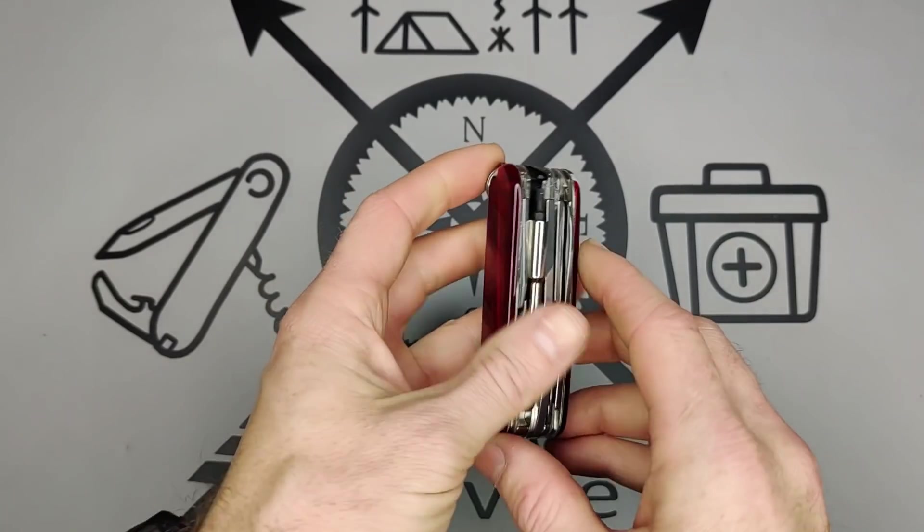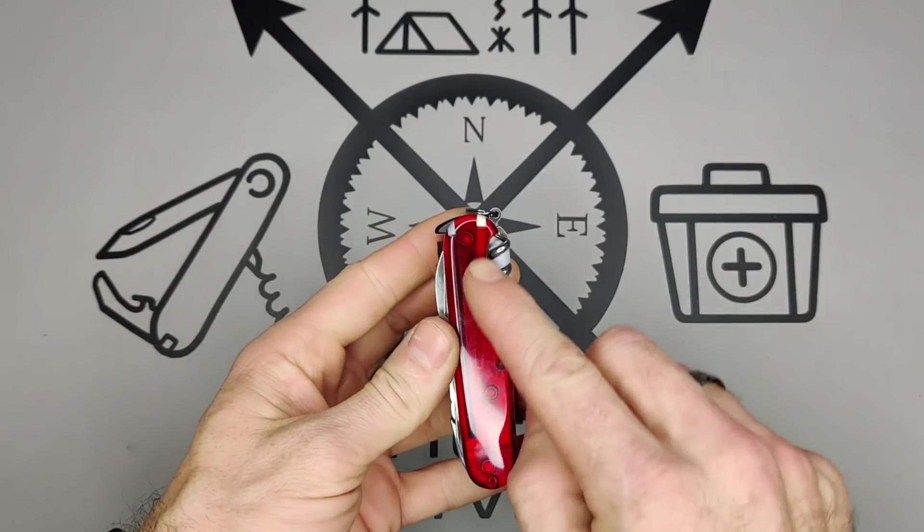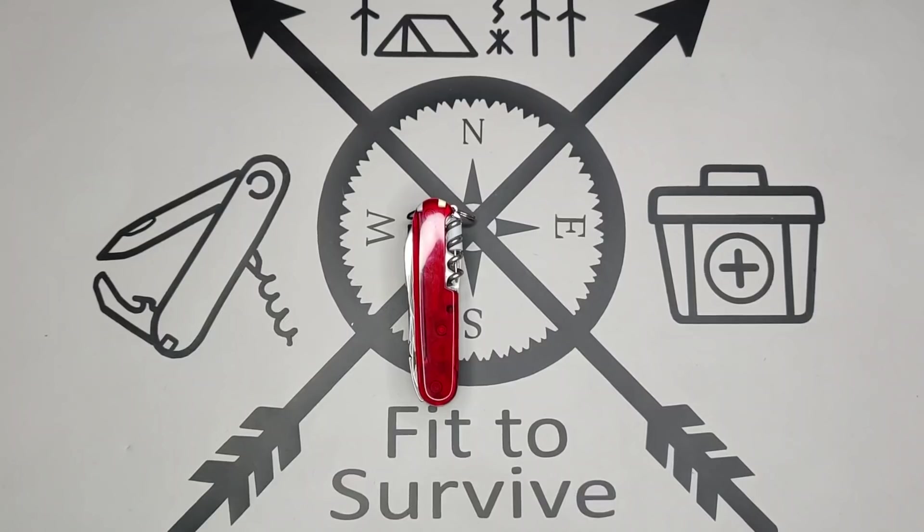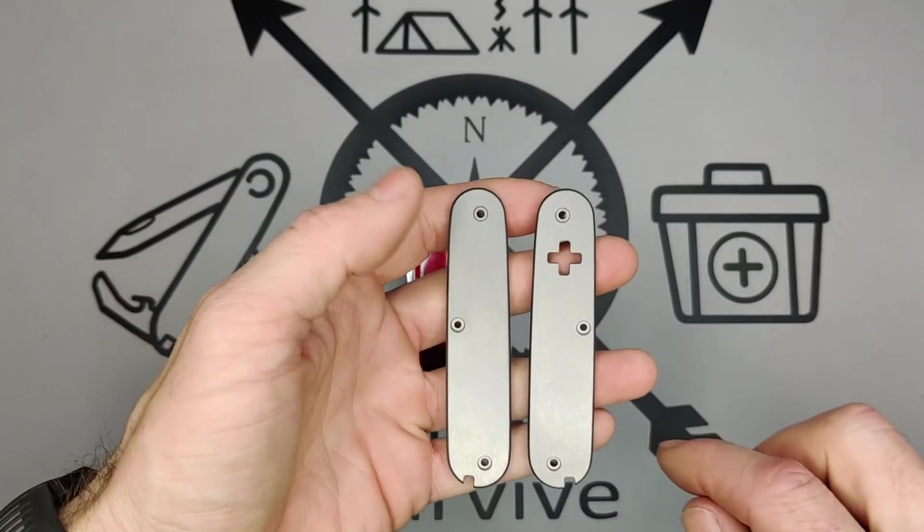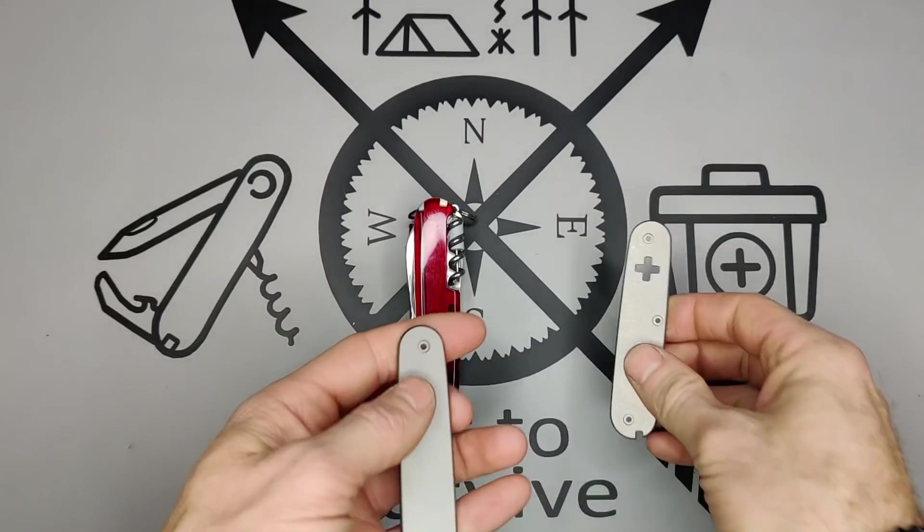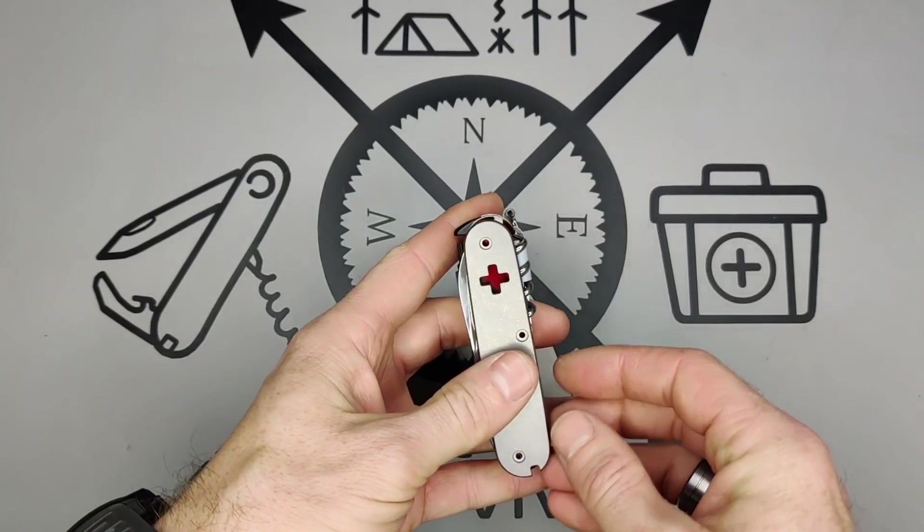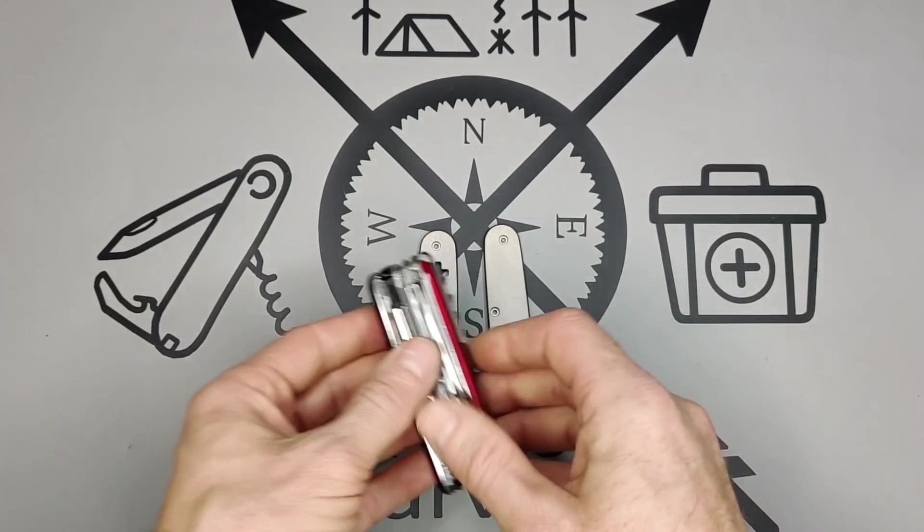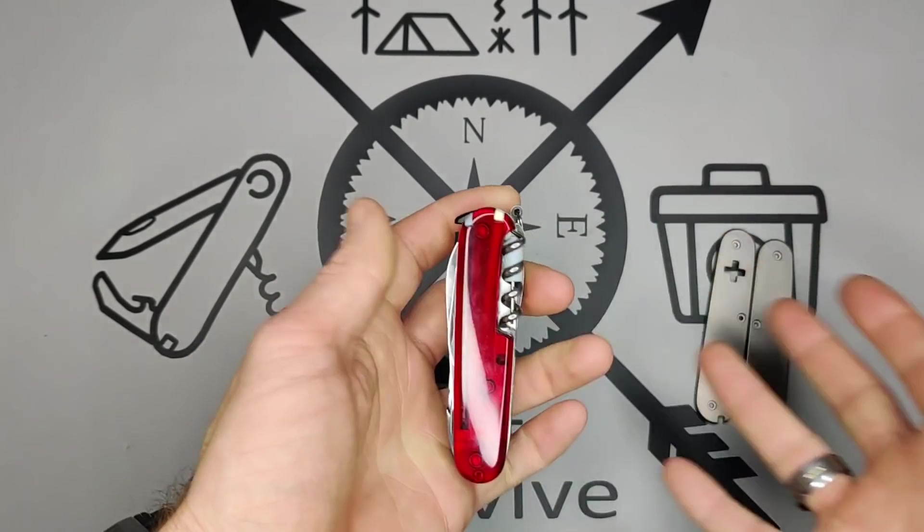Since removing the blade layer will leave an awkward empty gap where the corkscrew belongs, we're going to be using these titanium scales. And if you notice, they do not have a cutout on the back. So we can easily remove the blade layer without having this awkward gap in the back.